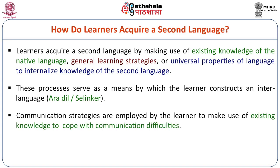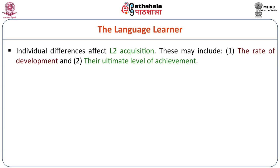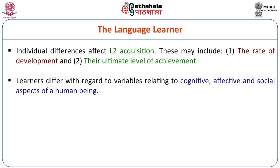It also depends upon the language learner — their position in L1 and how proficient they are in their native language. Individual differences affect L2 acquisition, including the rate of development and their ultimate level of achievement. Learners differ with regard to variables relating to cognitive, affective, and social aspects of the human being.